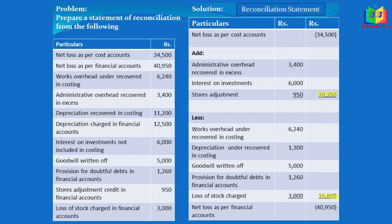We have entered all items in the reconciliation statement. Now we add the totals: in the add portion we have 3,400 + 6,000 + 950 = 10,350. In the less column we have 6,240 + 1,300 + 5,000 + 1,260 + 3,000 = 16,800. Since we started with net loss, we subtract the add total (10,350) from 34,500 and add the less total — doing it in reverse.